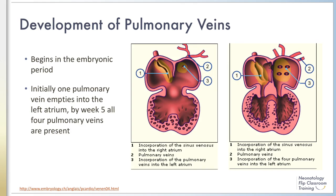The pulmonary veins arise independently in the mesenchyme of the mediastinum and become incorporated into the left atrium during the embryonic phase of lung development. Initially, one pulmonary vein empties into the left atrium, but by five weeks, all four pulmonary veins are present. The remainder of the pulmonary venous system follows the morphogenesis of the lungs.